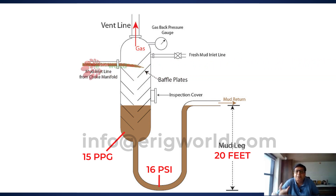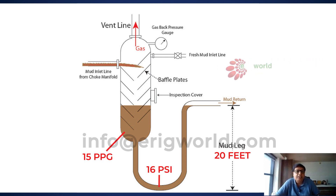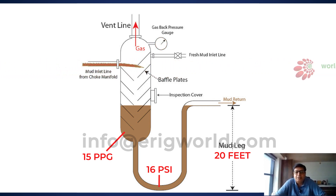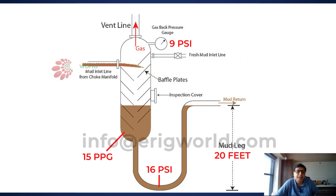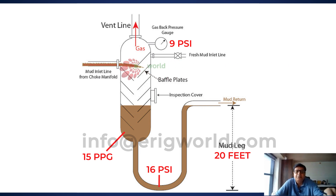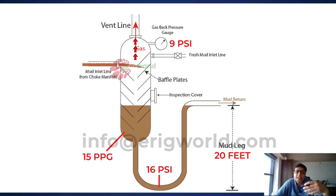The design feature or function of this MGS system is such that this gauge represents the internal or buildup pressure of the MGS. Now, if the MGS buildup pressure is 9 psi, then that 9 psi will fail to pass through the liquid seal — it will not breach 16 psi because 9 psi is less than 16 psi. So the gas will be vented from the vent line.